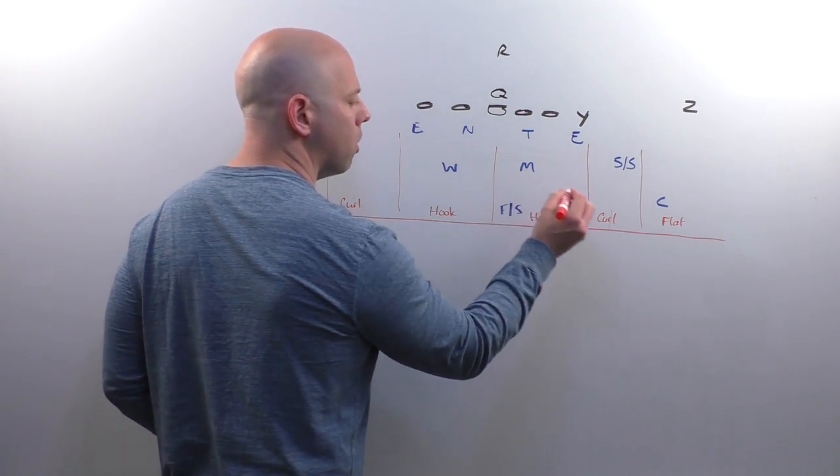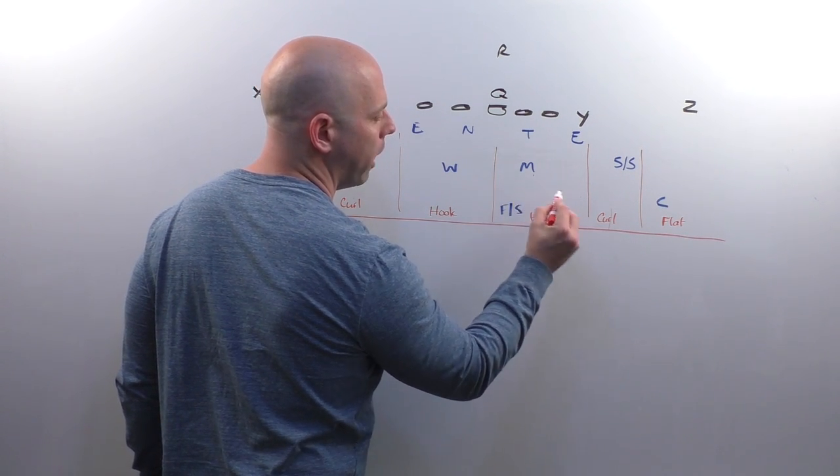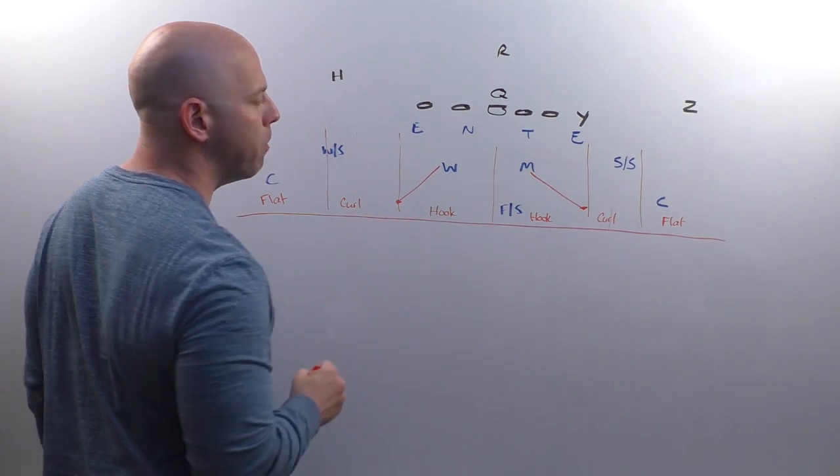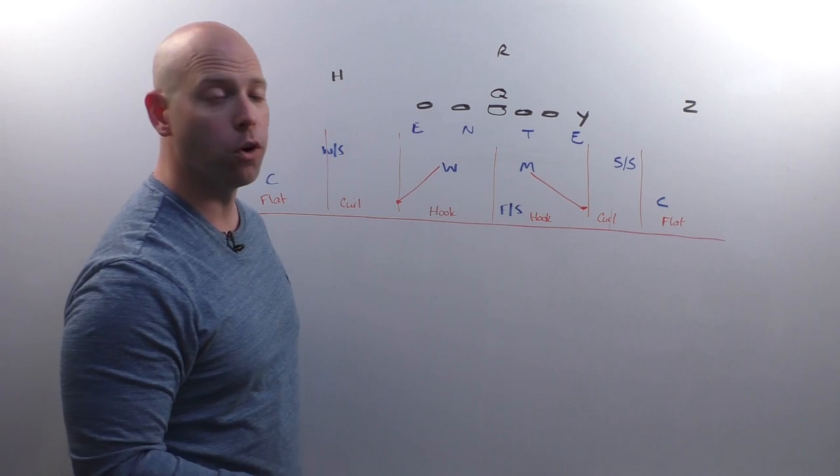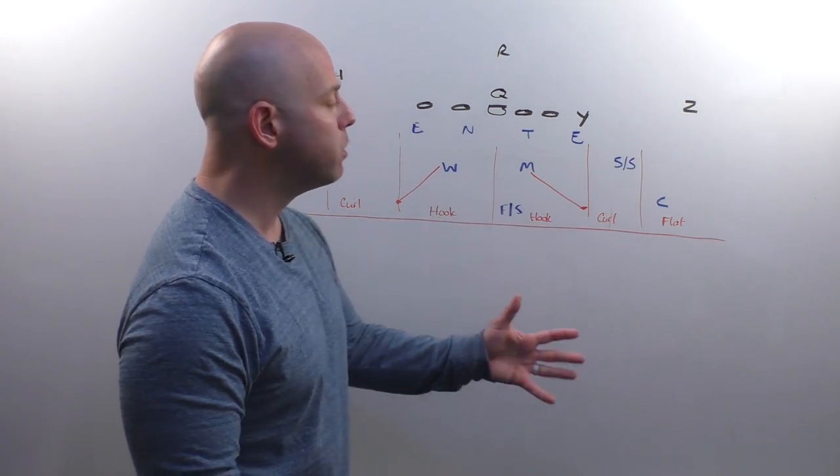So what we do is we use our mic and our will as our hook curl player. They're going to drop to that hash mark area on a pass read. Now obviously they're not going right there. They're reading run first. They're run players first. But they're going to be the hook curl players.